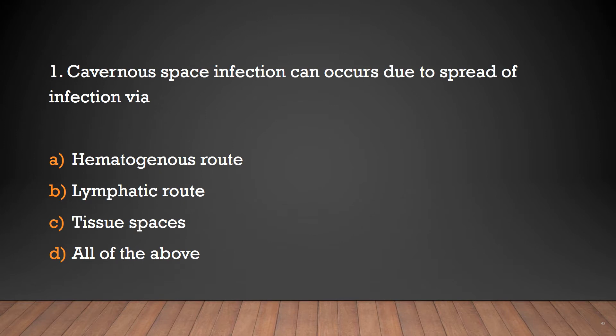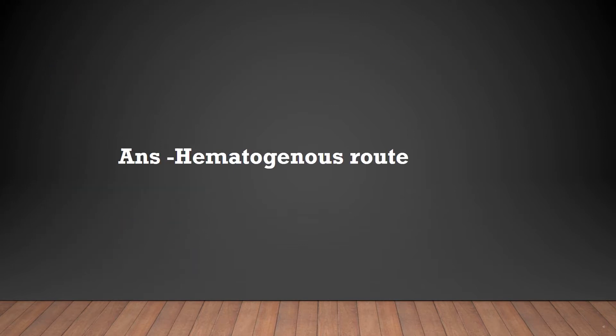Cavernous sinus space infection can occur due to spread of infection via: hematogenous route, lymphatic route, tissue spaces, or all of the above? The answer is all of the above — hematogenous route being a key pathway.